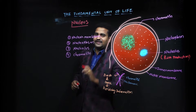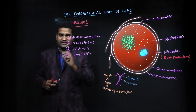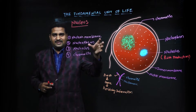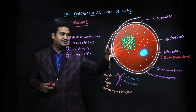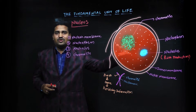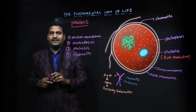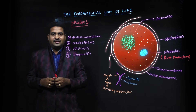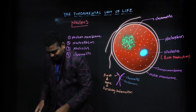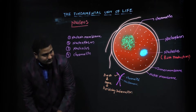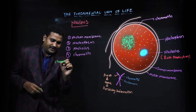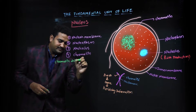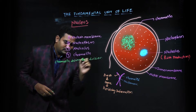Now, chromatin. The thread-like structure inside the nucleus is called chromatin. This chromatin during cell division condenses and forms the chromosomes.